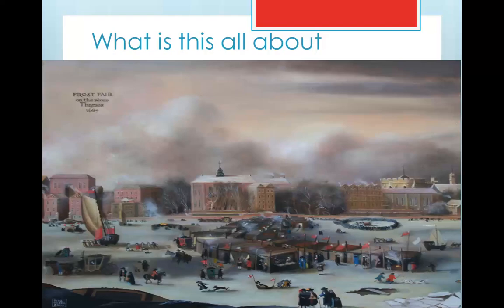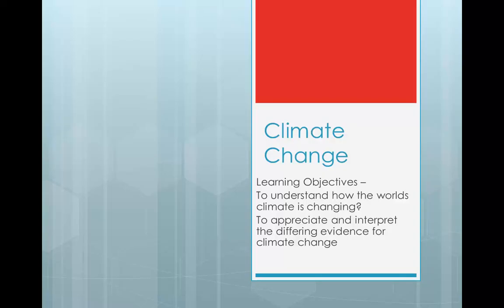This is a slightly different image — a frost fair in 1684 in central London. The River Thames has frozen, which is something we will not see in our lifetimes at the moment. What we're going to look at over the course of today's video is how the world's climate is changing and to appreciate the differing evidence for this climate change.